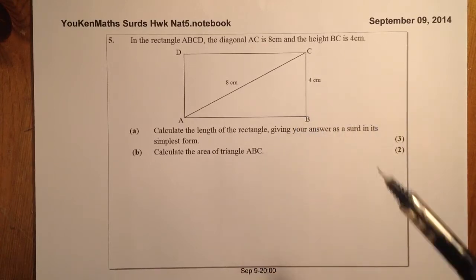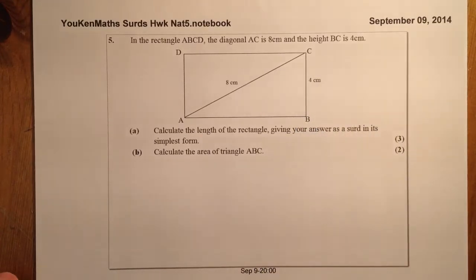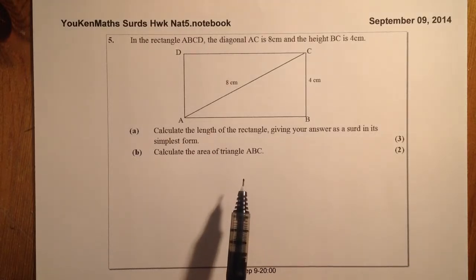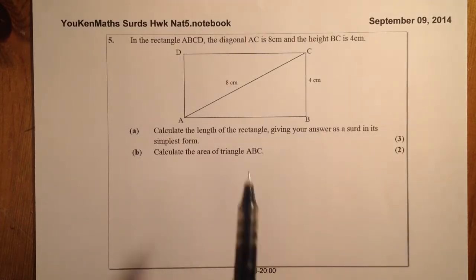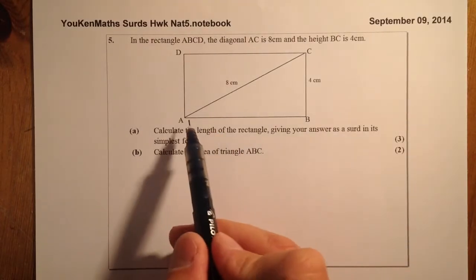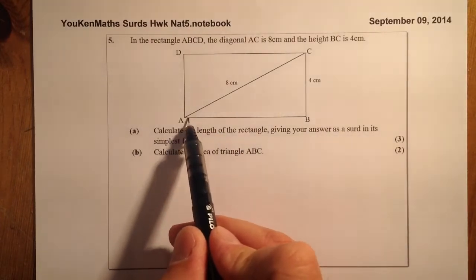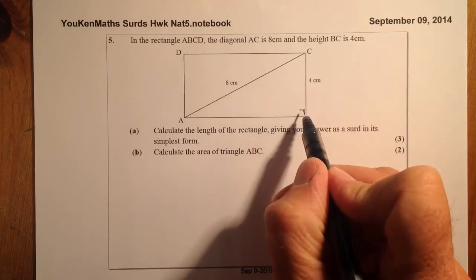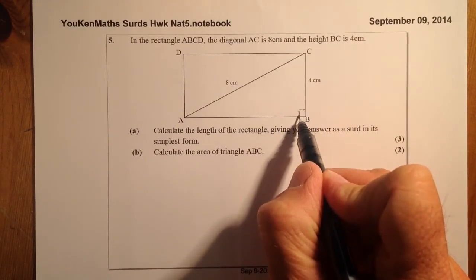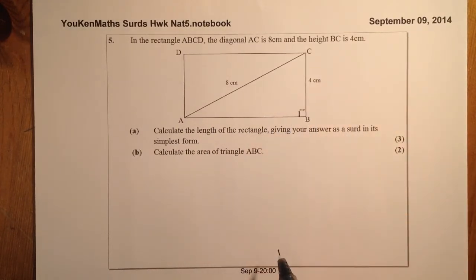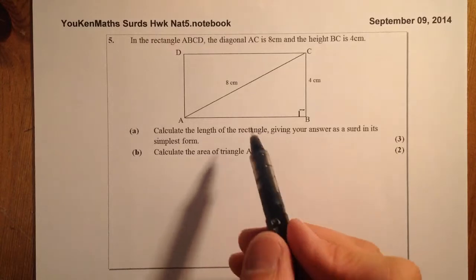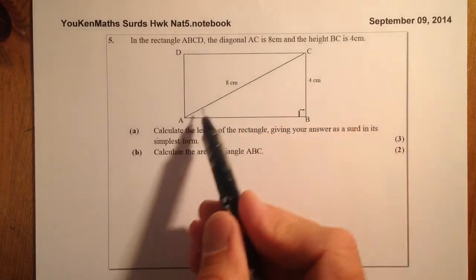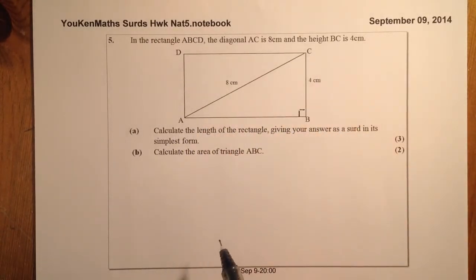Calculate the length of the rectangle giving your answer as a surd in its simplest form. So this one here — if I'm going to try and find the length, the length is going to be AB. I know that if that's a rectangle, that's a right angle there, and what I'm going to do is try and work out the length of this using Pythagoras' Theorem.